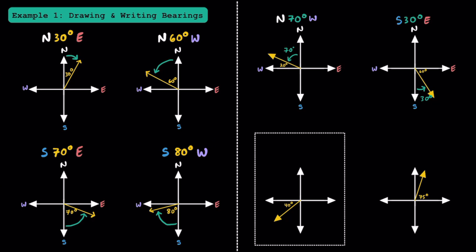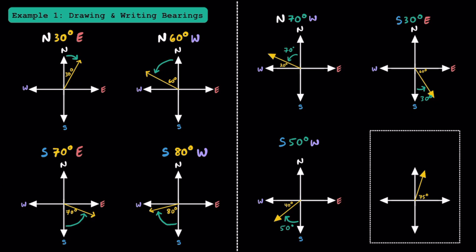Let's look at the next one — pause if you'd like to try it yourself. While it's 40 degrees away from the west direction, let's find how far from south. Since these are complementary angles adding to 90 degrees, it's 50 degrees from south since 40 plus 50 equals 90. The bearing is south 50 degrees west. For the last one: we're given 75 degrees, so the complementary part is 15 degrees since 15 plus 75 equals 90. The bearing is north 15 degrees east.